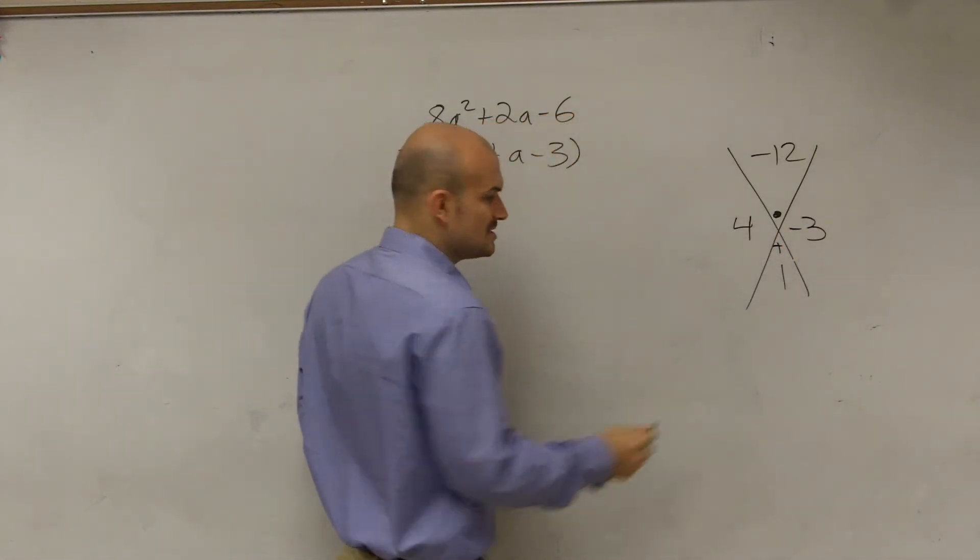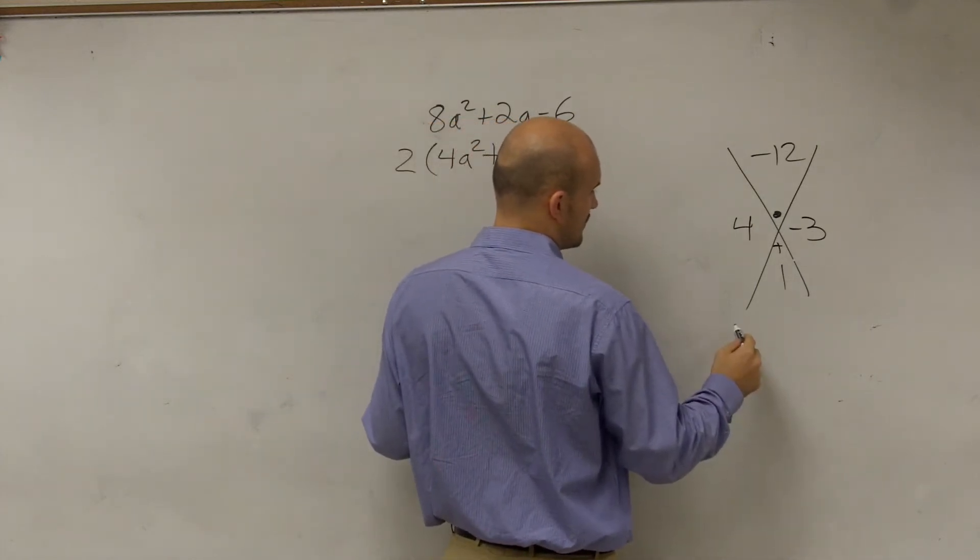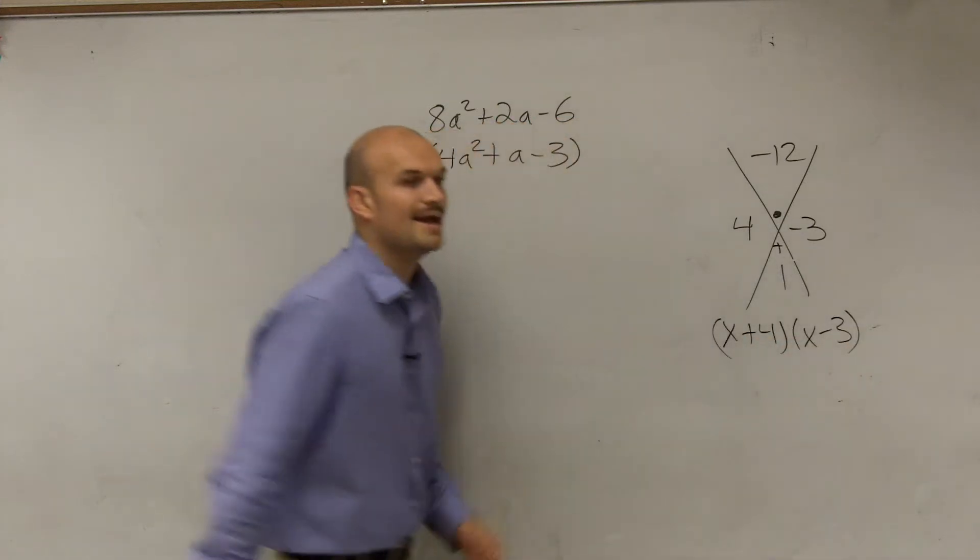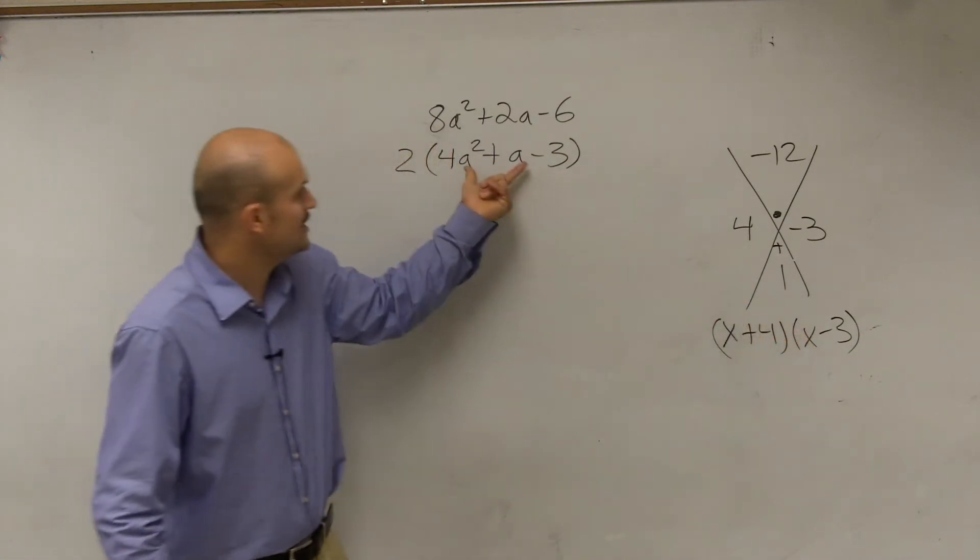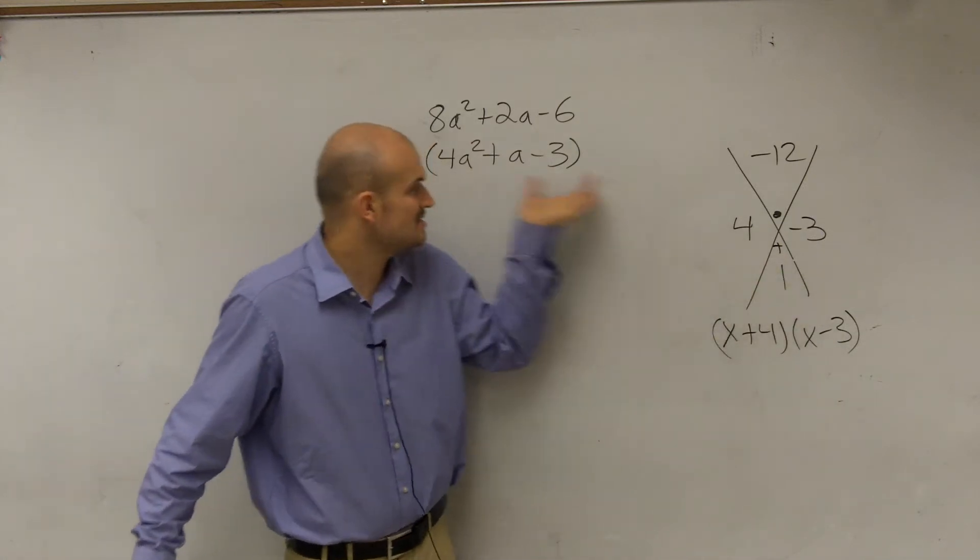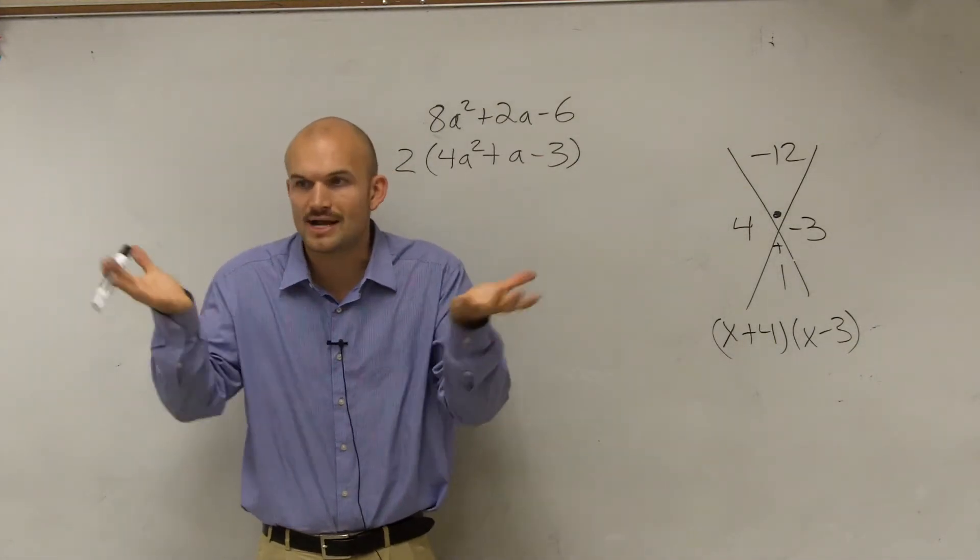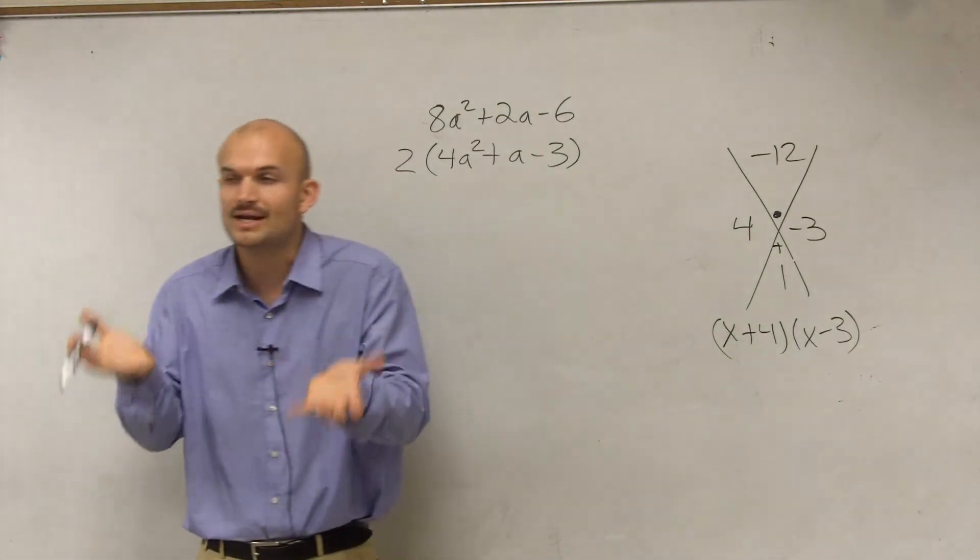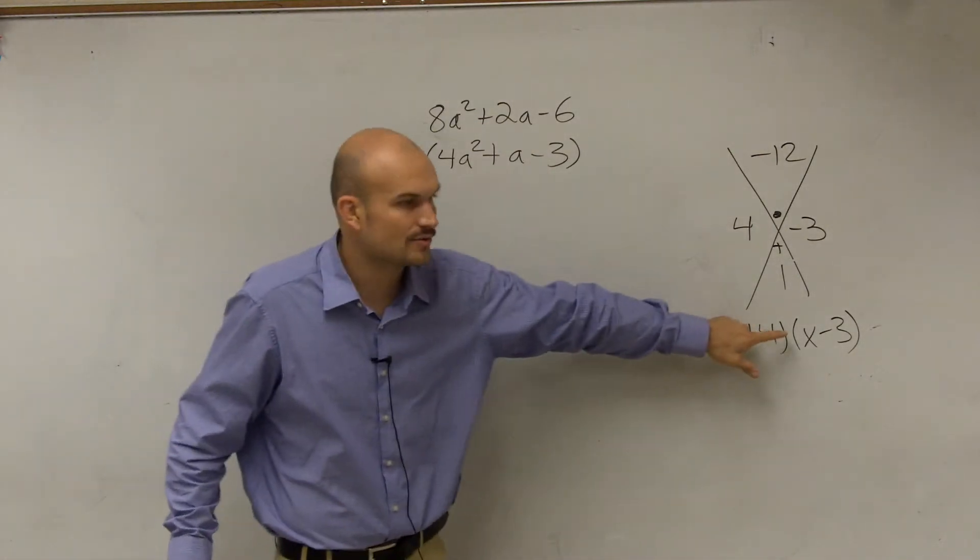Now, the most common mistakes—like when a was 1, students will do this. They do x plus 4 times x minus 3, and that is not the correct answer. The reason being is, does this times this equal this? No, go ahead and do your FOIL, this times this does not equal that. Remember, factoring is taking a number or a polynomial and breaking it apart as a product. You're not changing the answer, though, you're not changing the number, you're just rewriting it as a product.